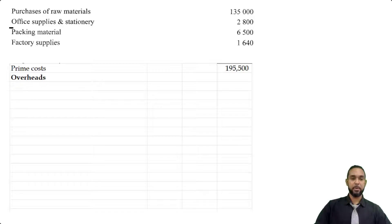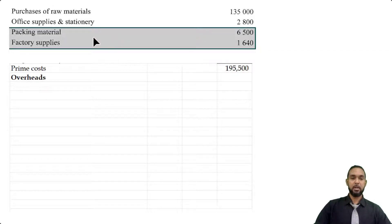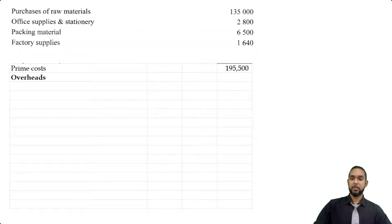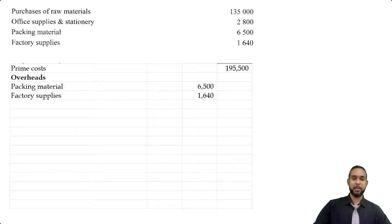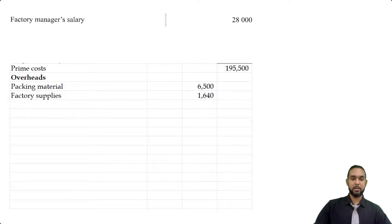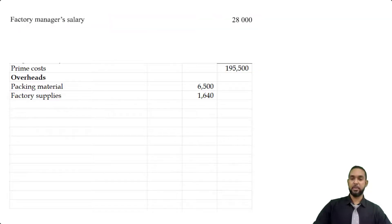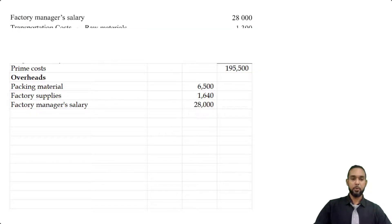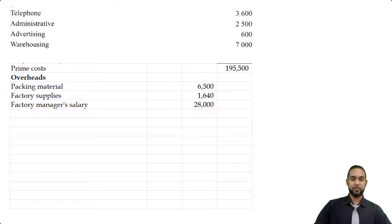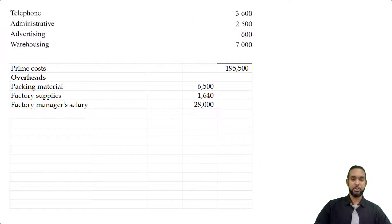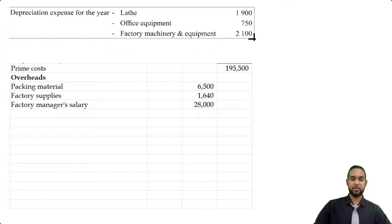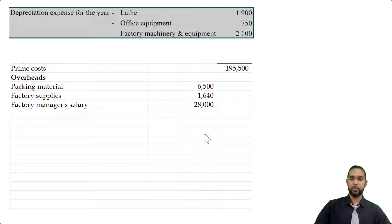Now we deal with the factory overheads. Starting from the top, I'm seeing packing material and factory supplies — let's put those in. Next, factory manager's salary of $28,000. Then we move to depreciation on the lathe and the factory machinery and equipment.